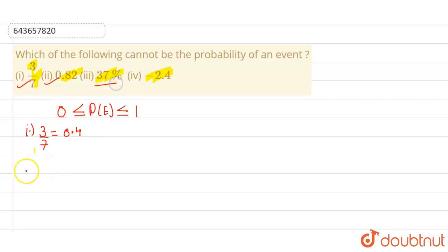37 percent. Now if we see 37 percent, if we remove the sign of percent, it is divided by 100. That means 0.37, which again lies between 0 and 1. So option 3 will also lie between this range.